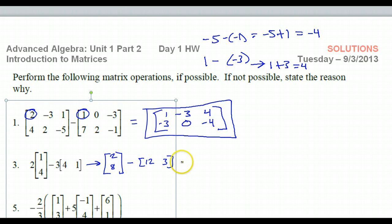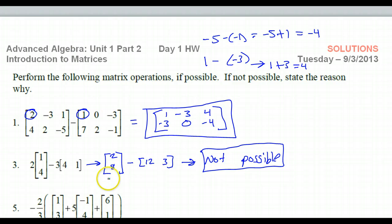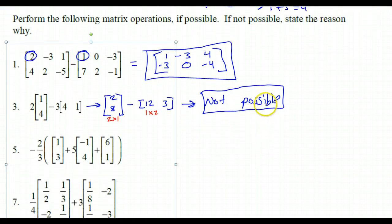But then this is not possible. In order to add or subtract matrices, the dimensions have to be the same. This matrix is a 2 by 1 matrix, but this is a 1 by 2 matrix. So those have to be the same. So number 3, not possible.